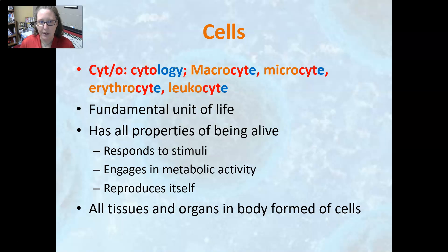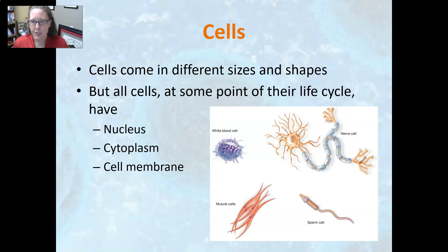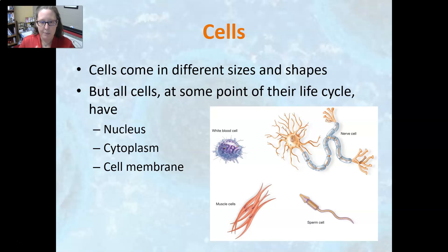The cell is a fundamental unit of life, so everything happening in your body is happening at the cellular level. The cell has all the properties of being alive — it can respond to stimuli, it engages in metabolic activity, and it reproduces itself. All tissues and organs in the body are formed of cells. Cells come in different sizes and shapes; some are long — some of your muscle cells are as long as the muscle in your body, so it can be the length of your thigh muscle, for example — and some are really small. One thing they all have in common is that at some point in their life cycle, all cells have a nucleus, cytoplasm, and cell membrane.